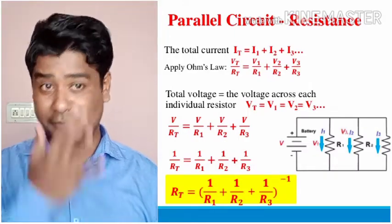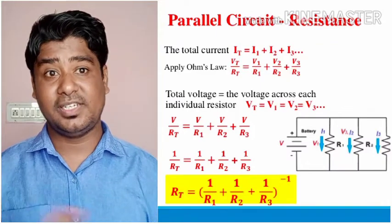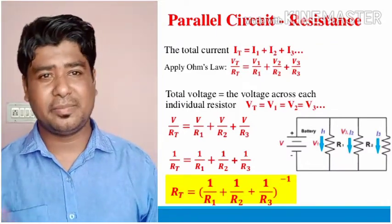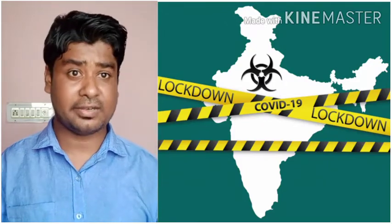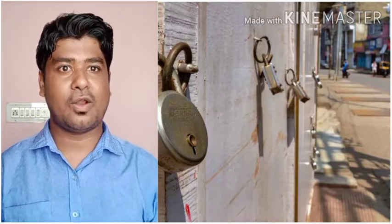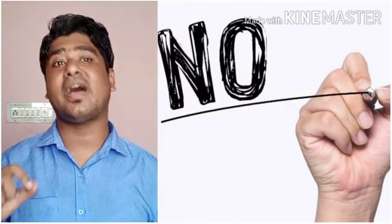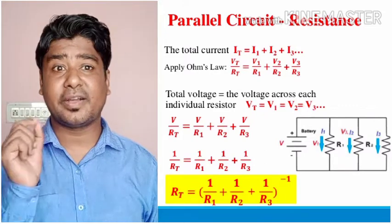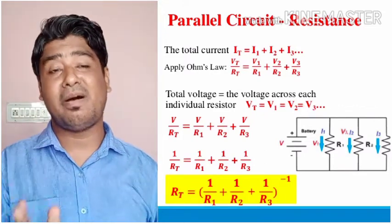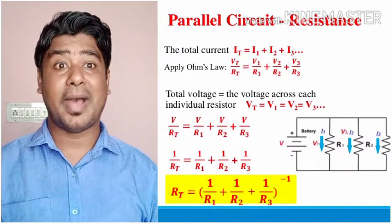This is the formula for parallel resistance: 1/R = 1/R1 + 1/R2 + 1/R3. You will get problems on both formulas — both series and parallel resistance. There are also combination problems where both series and parallel are present. By definition: the reciprocal of the combined resistance in parallel equals the sum of the reciprocals of all resistors connected in parallel.